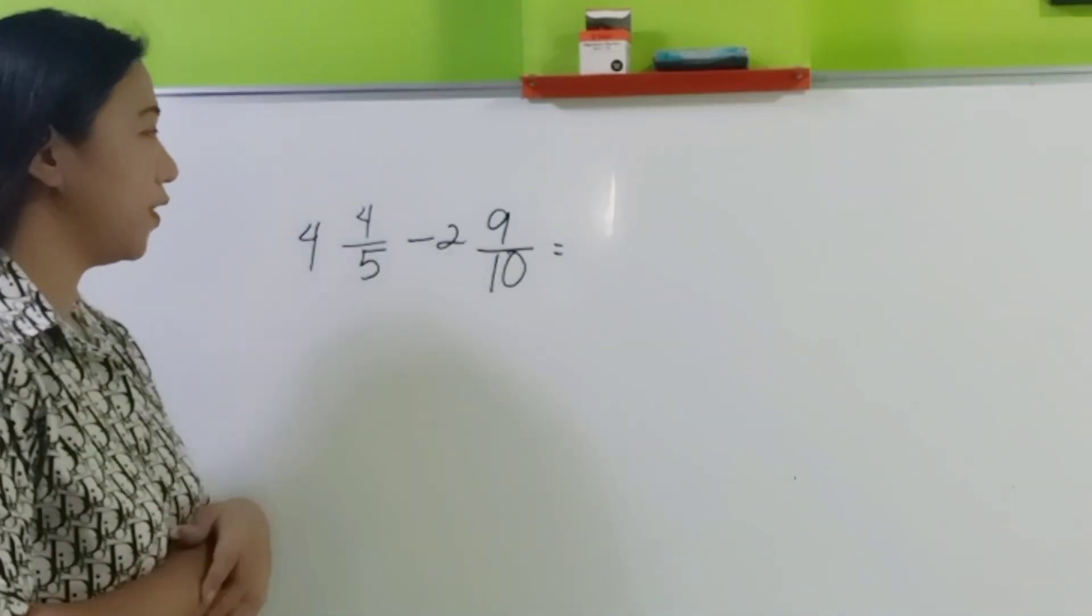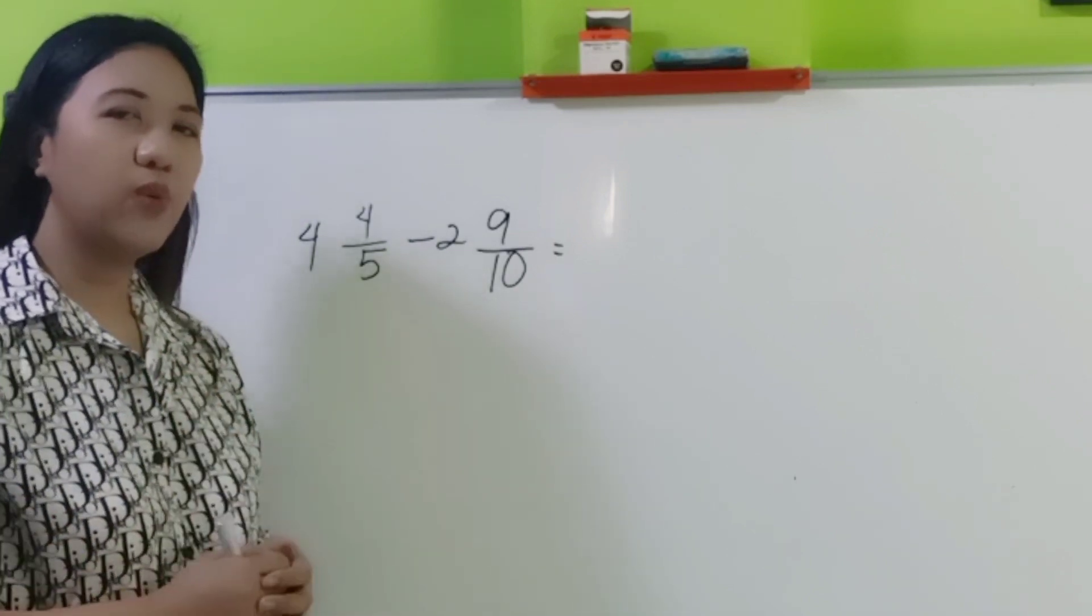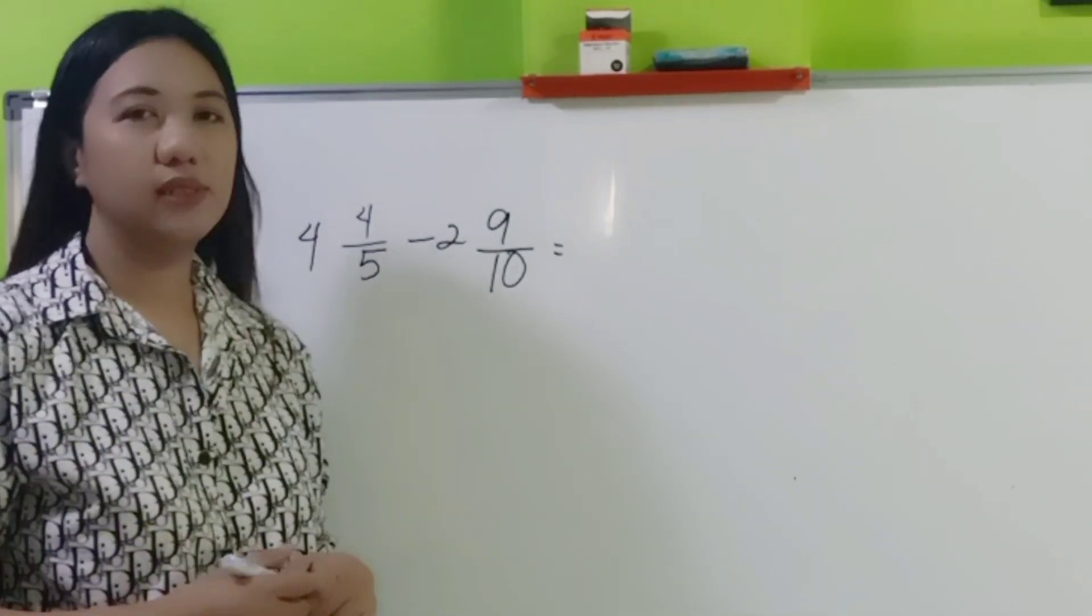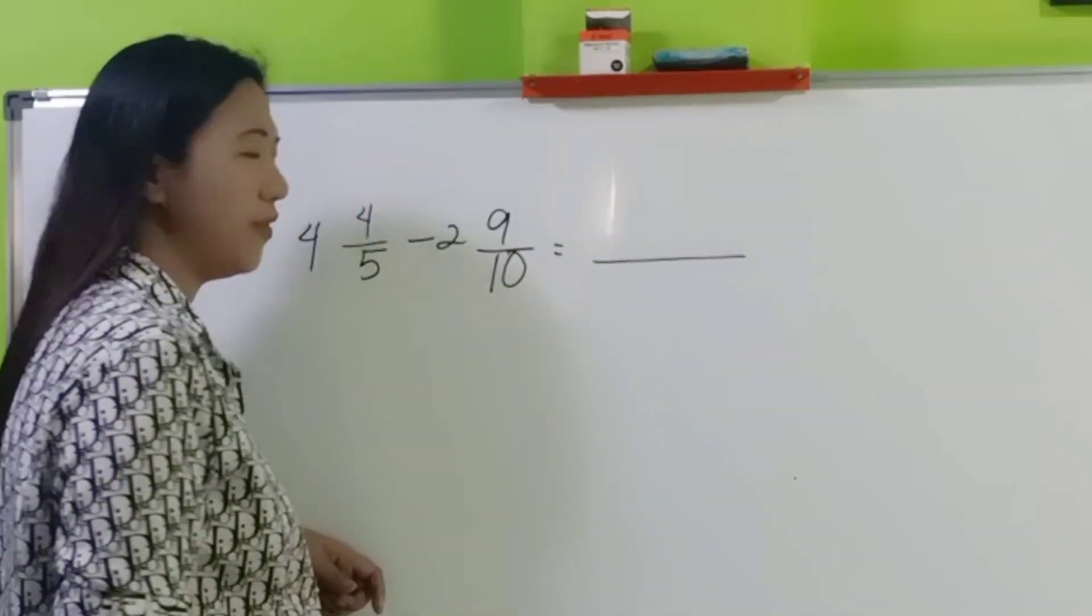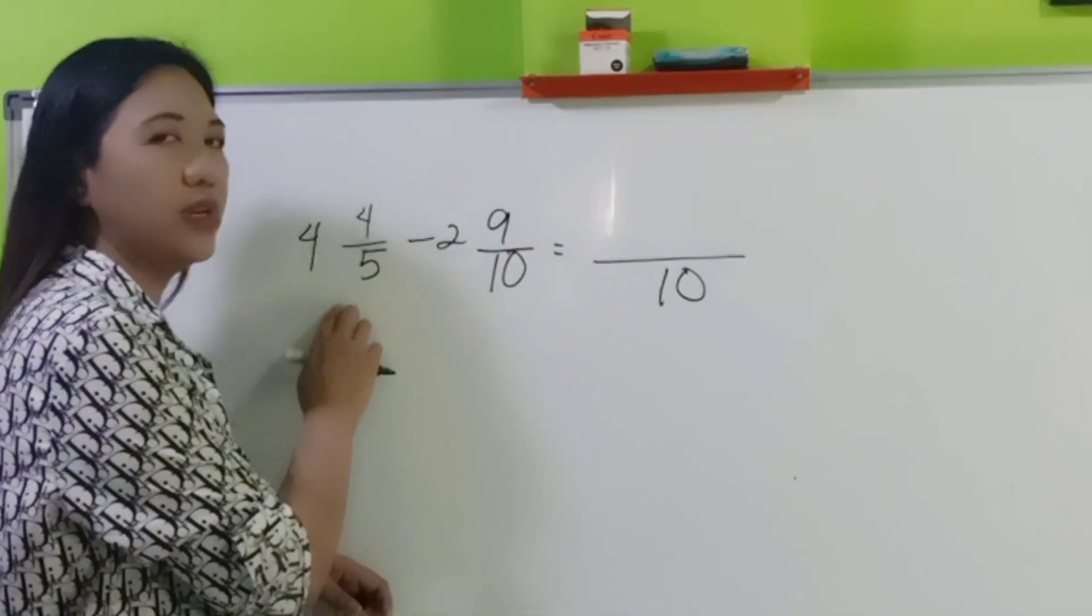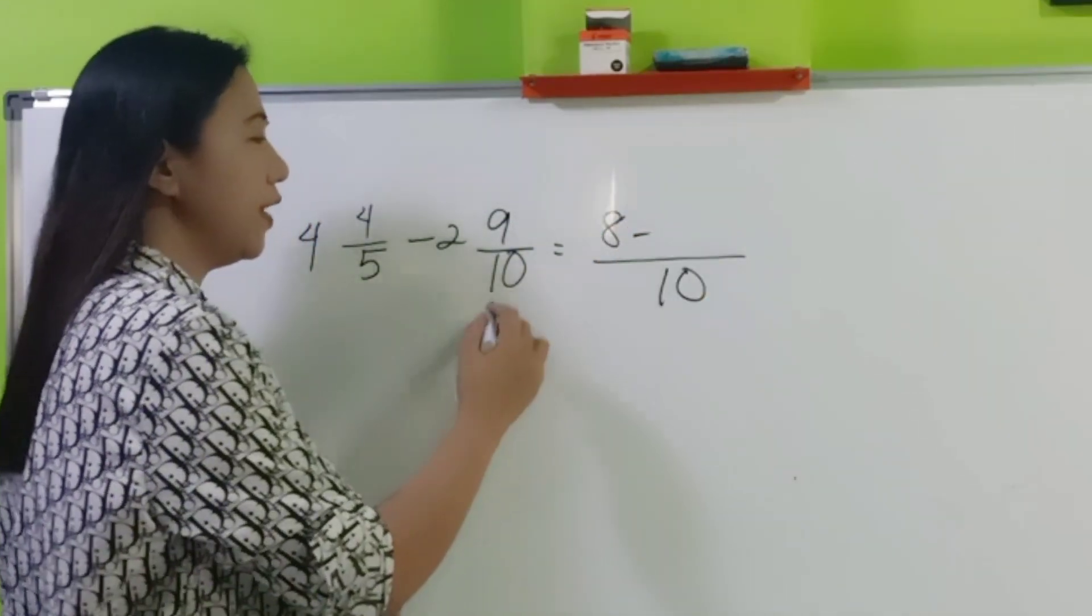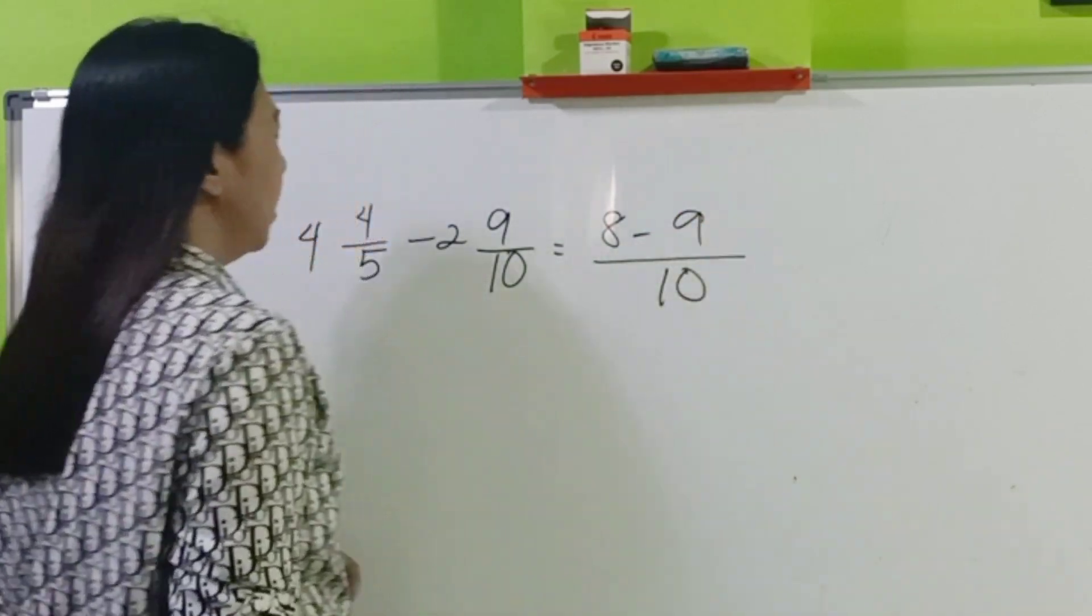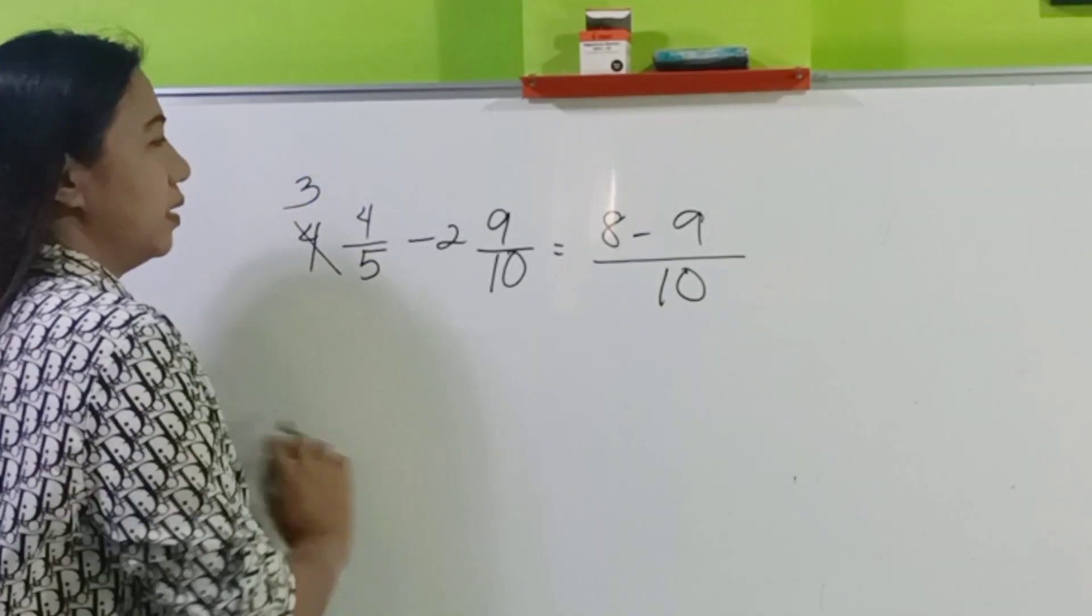Please do this also, 4 and 4 fifths minus 2 and 9 tenths, using the shortcut method. Pause the video for a while and come back later for the solution. Welcome back. Let's start. So, the LCD of 5 and 10 is 10. 10 divided by 5, 2 times 4 is 8 minus 10 divided by 10, 1 times 9 is 9. And then, borrow. This becomes 3.